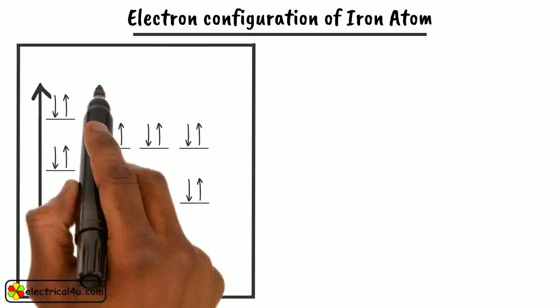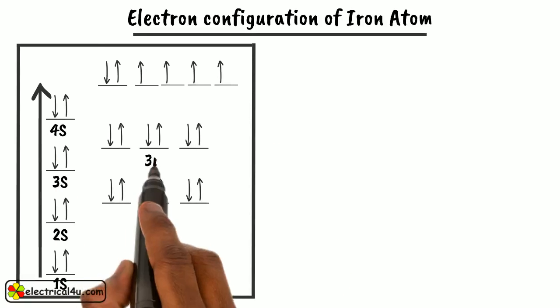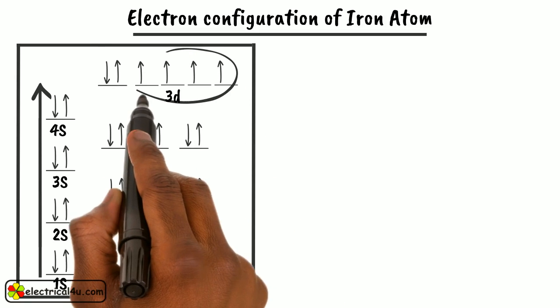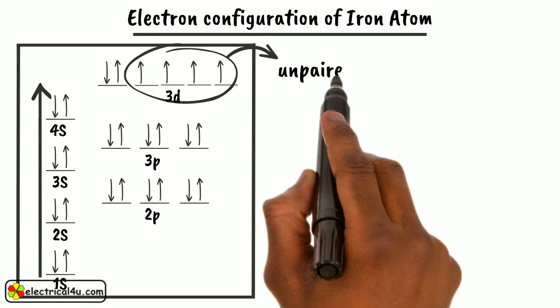let us discuss the electron configuration of iron atom. For that, let us draw the electron configuration of iron atom. Here, we can see there are 4 electrons in 3D orbital that remain unpaired.